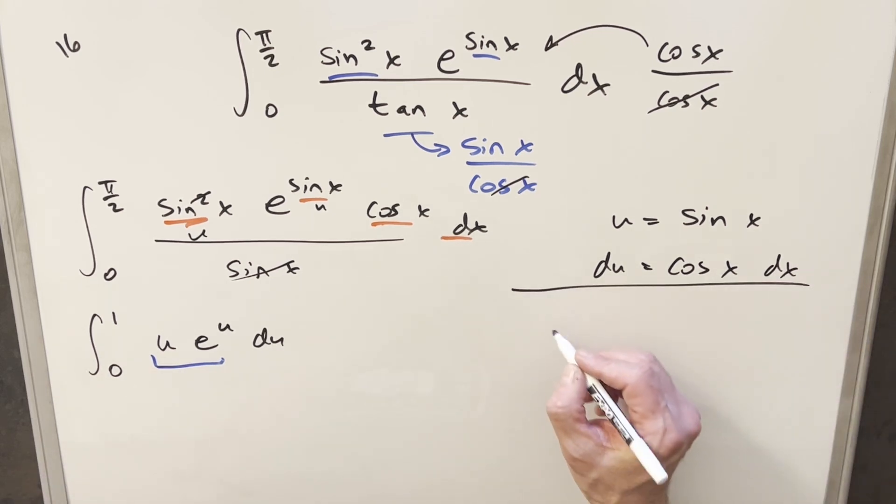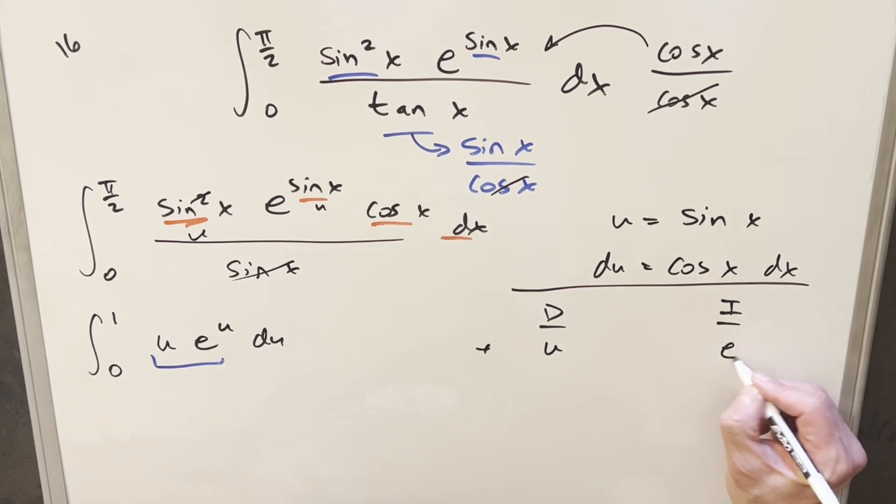So let's use, let's do the DI method over here, tabular integration. So we'll split it up. It's going to be good for me to differentiate u. When I differentiate this, it's going to go to 0. So we'll differentiate u, and we'll integrate e to the u. And we'll do this three times, I think. So we differentiate u, we get 1.